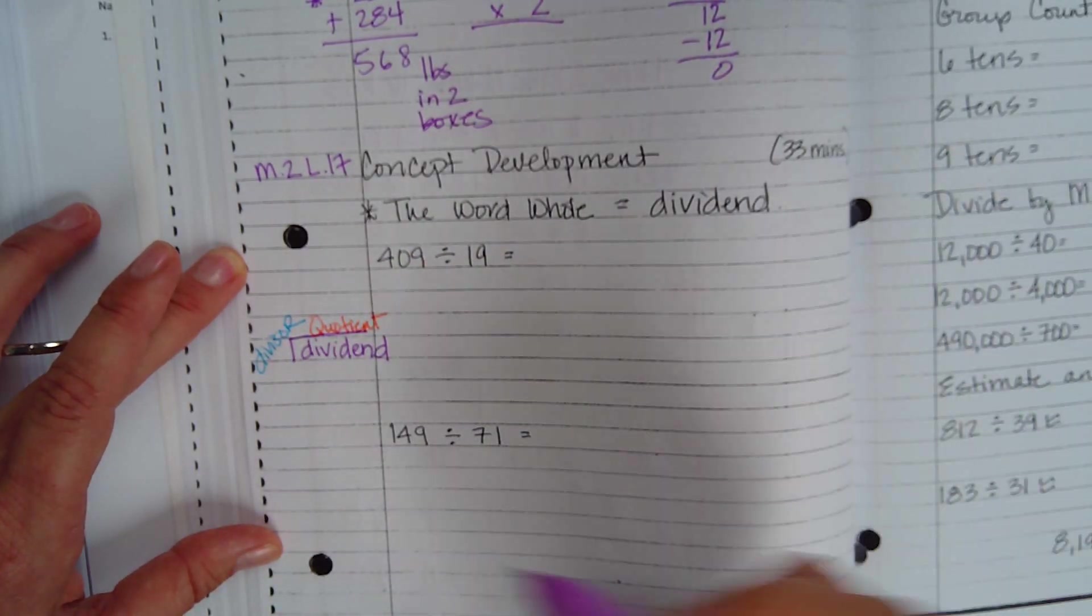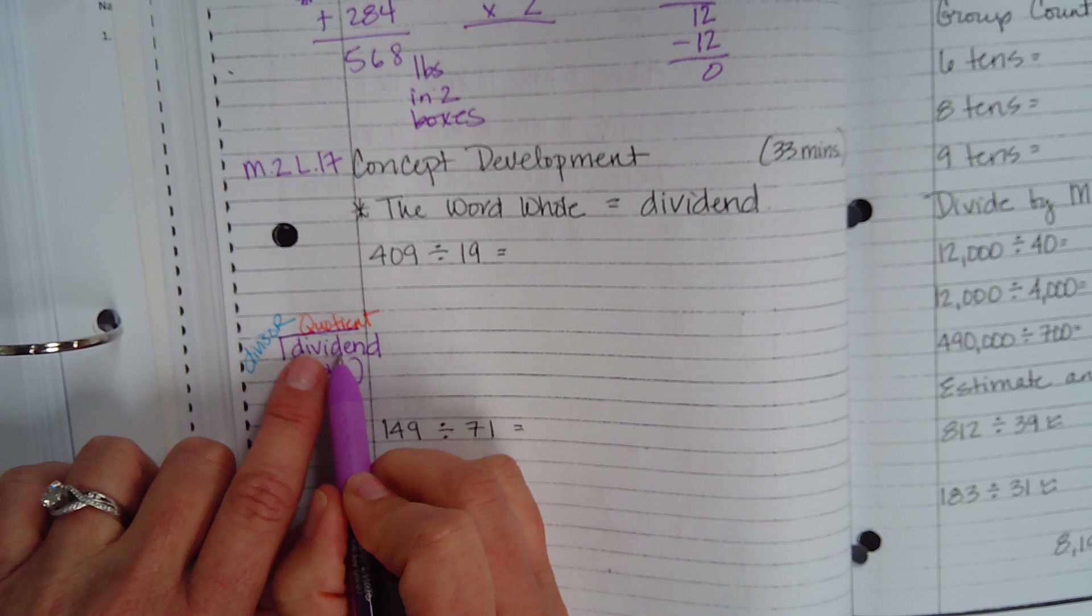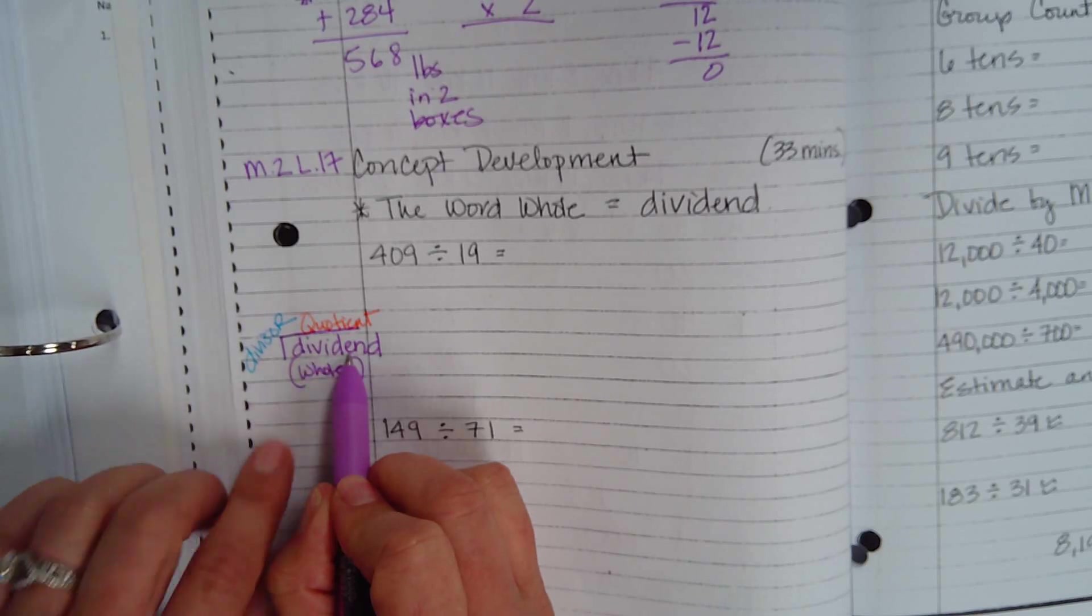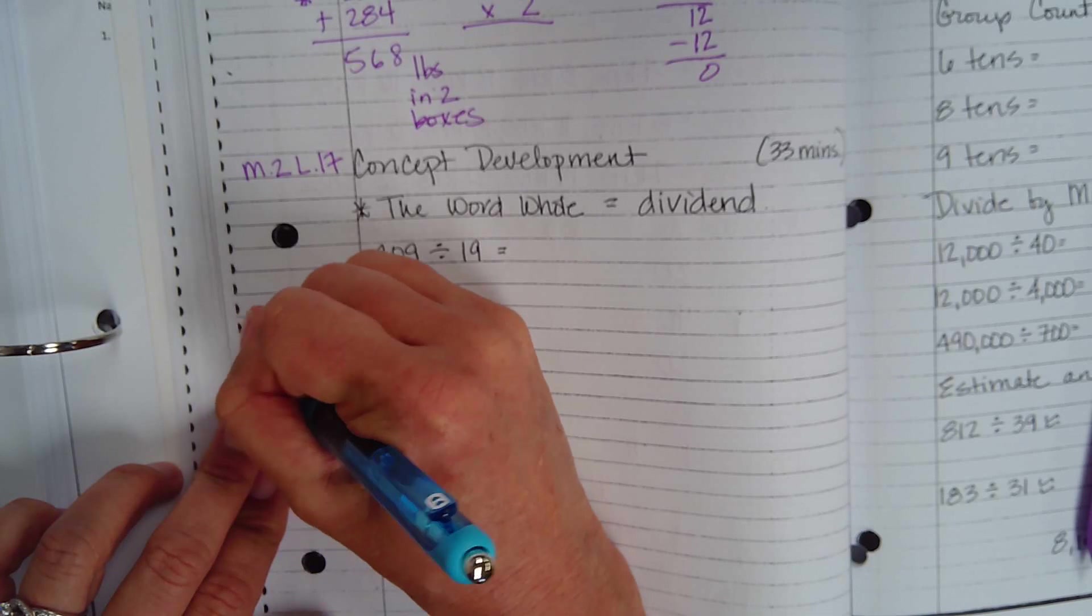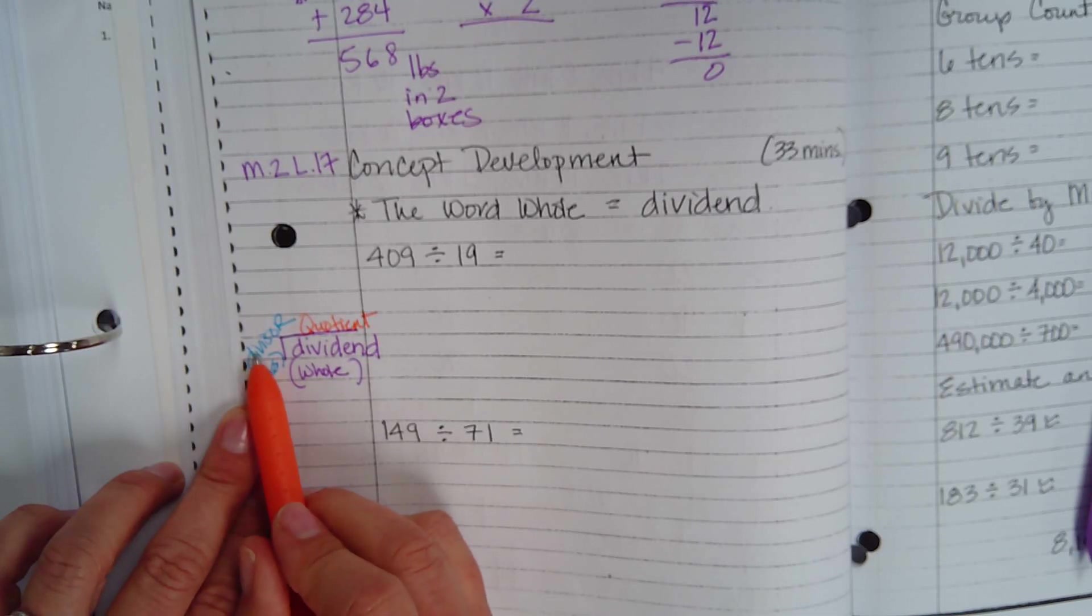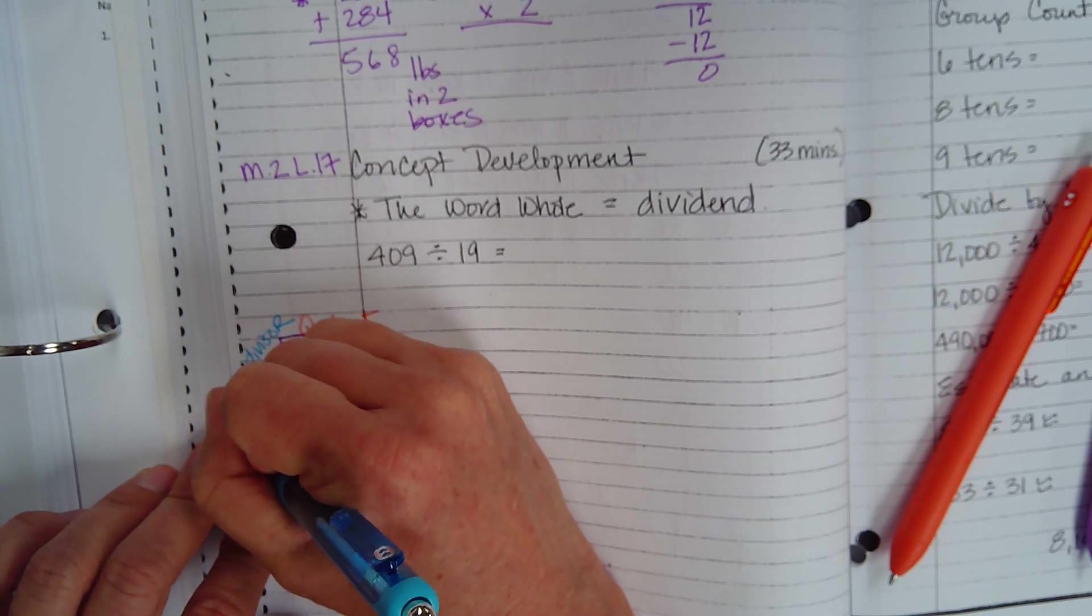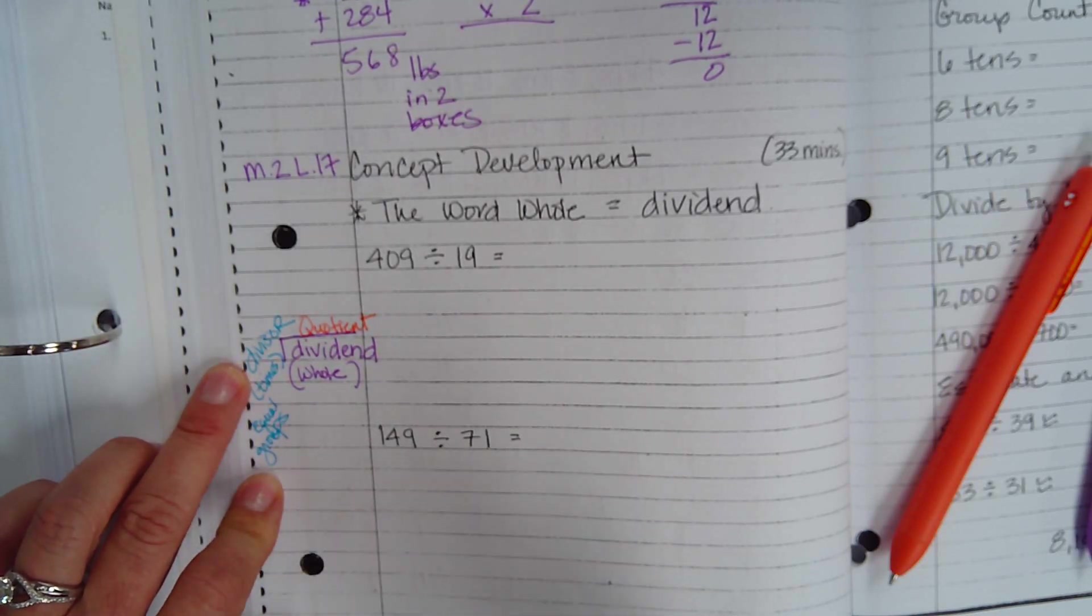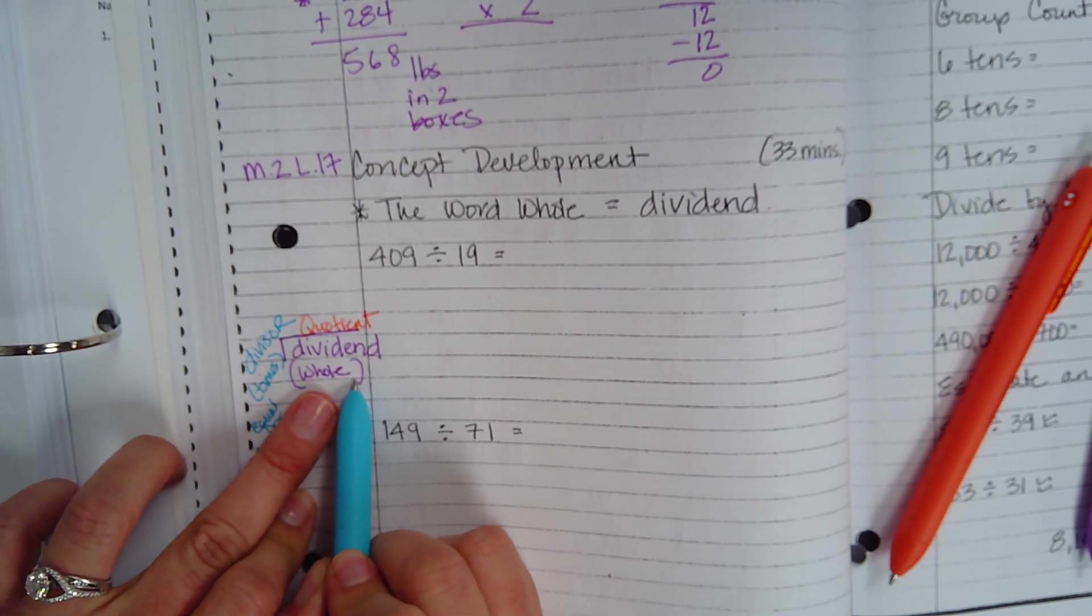So the dividend is always the whole number that you are dividing. You have to divide this number up. You have to divide this whole number up, and the divisor is how many times you're going to divide it up. This tells you how many equal groups. This is your equal groups is on the outside. How many equal groups do you need to make? And you're going to make the equal groups from this whole number, right?